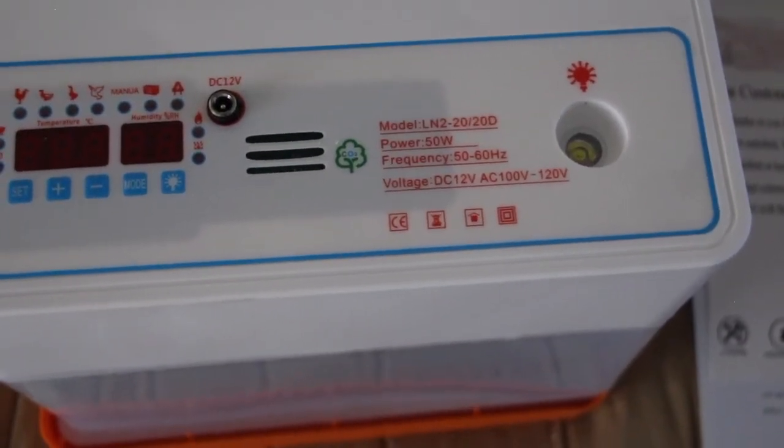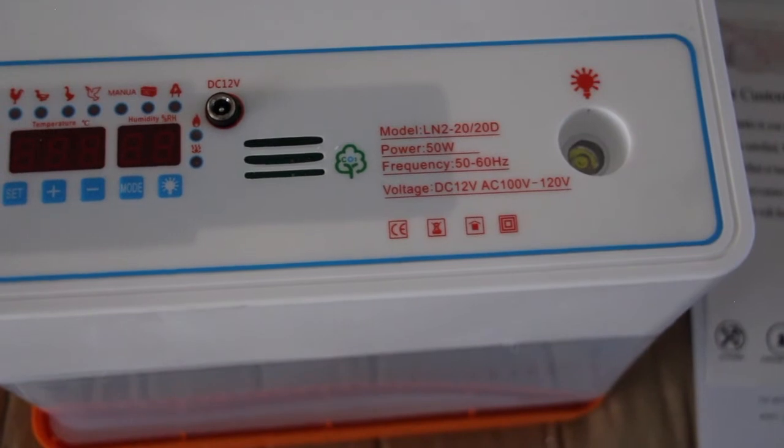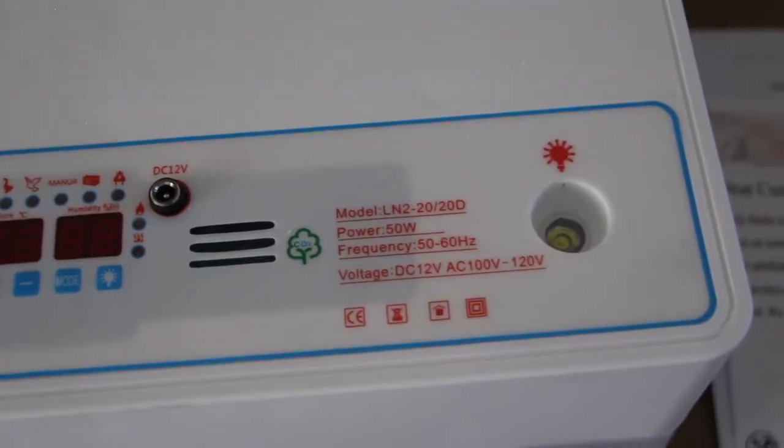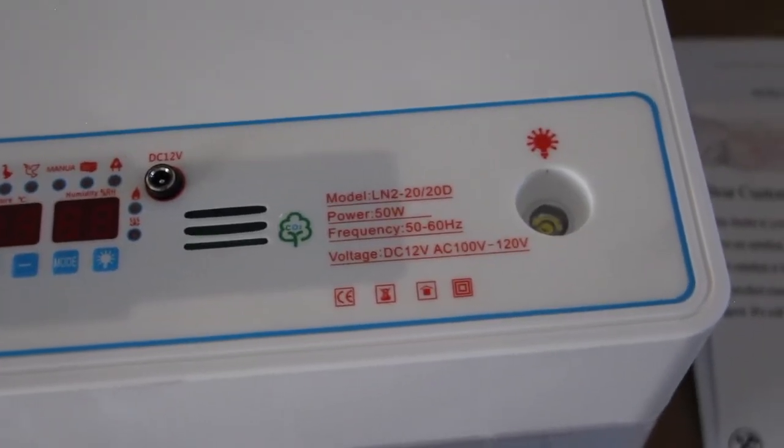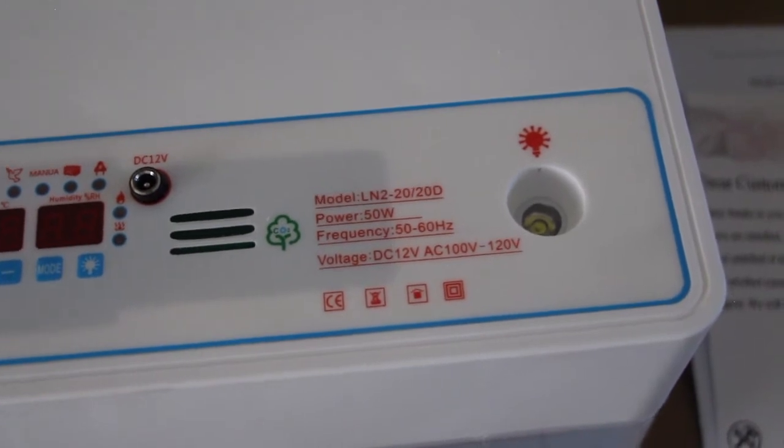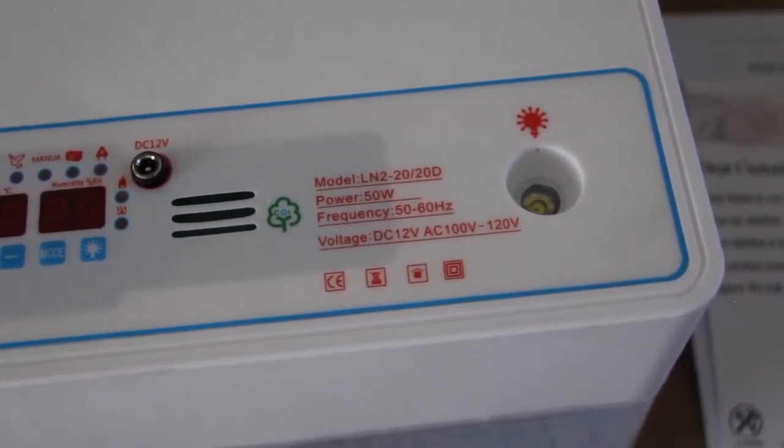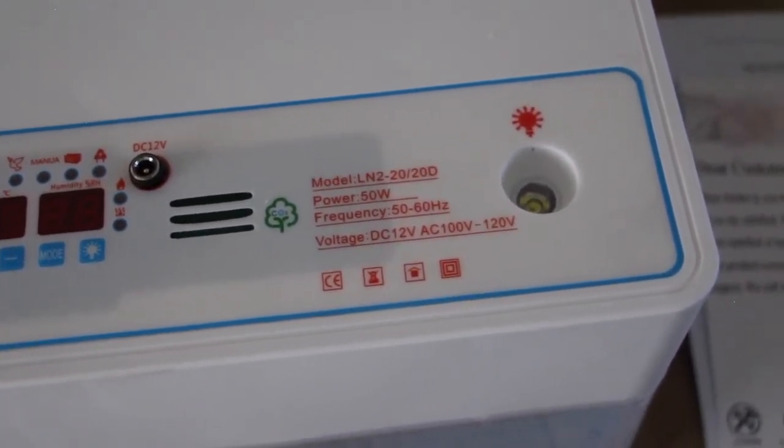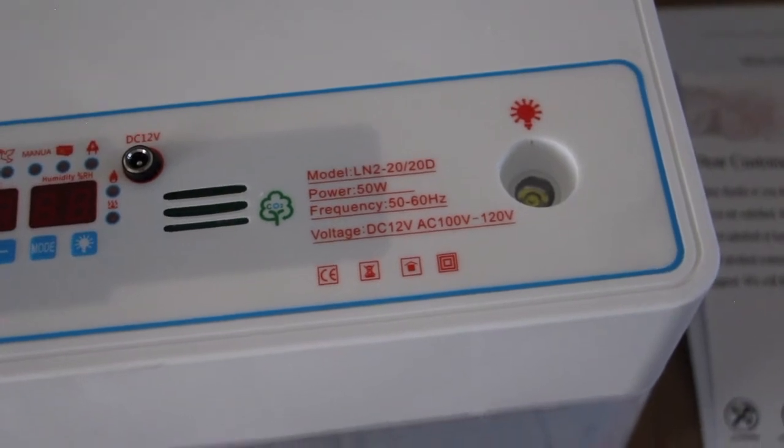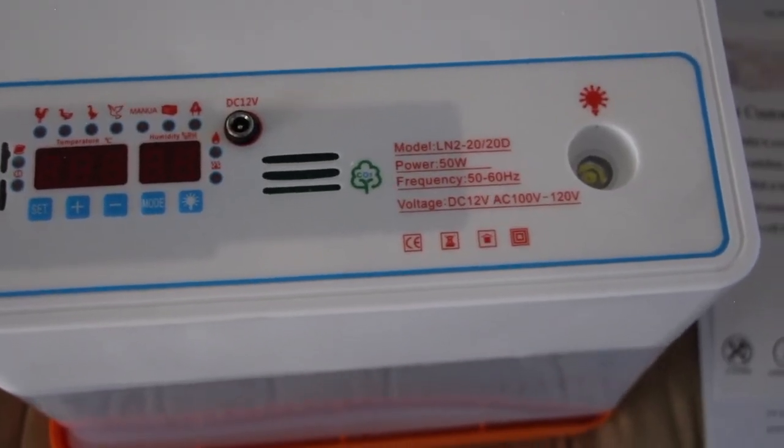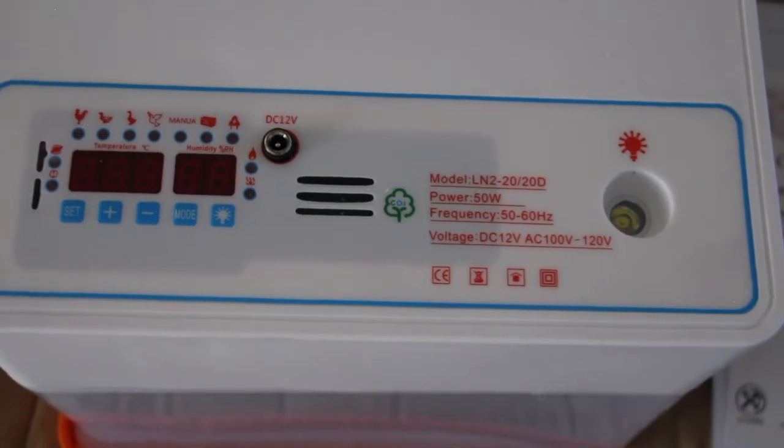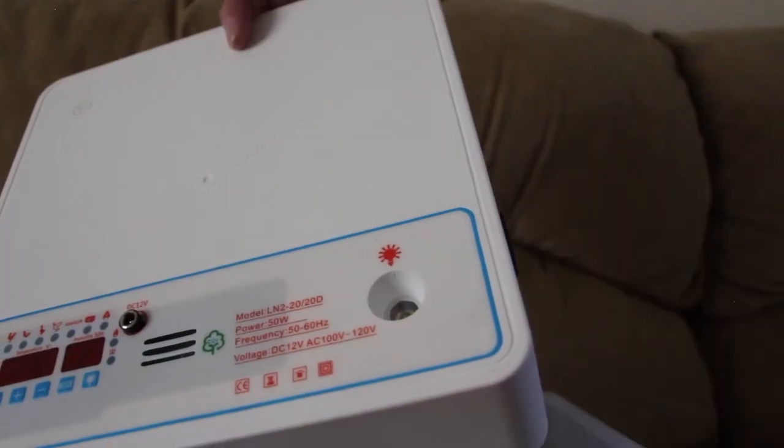This Anbel egg incubator has dual power. So if you lose your family supply of power or your external power supply is cut off, you can plug it to a 12 volt battery and continue incubating so that there's no interruptions.